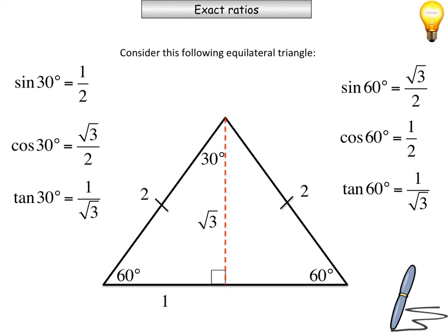And tan of 60, which is opposite over adjacent. That is actually a mistake. That should say root 3 over 1. Okay, sorry for that mistake. So that's root 3 over 1, which is the same as root 3. So tan of 60 is root 3.